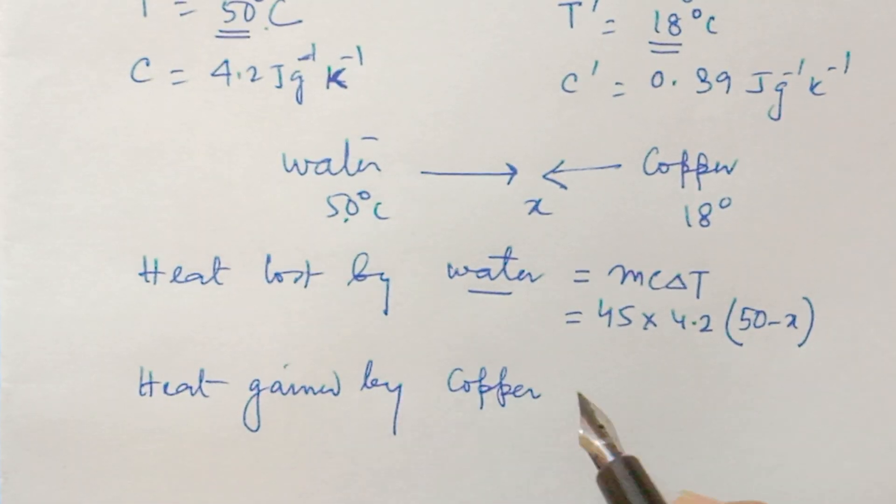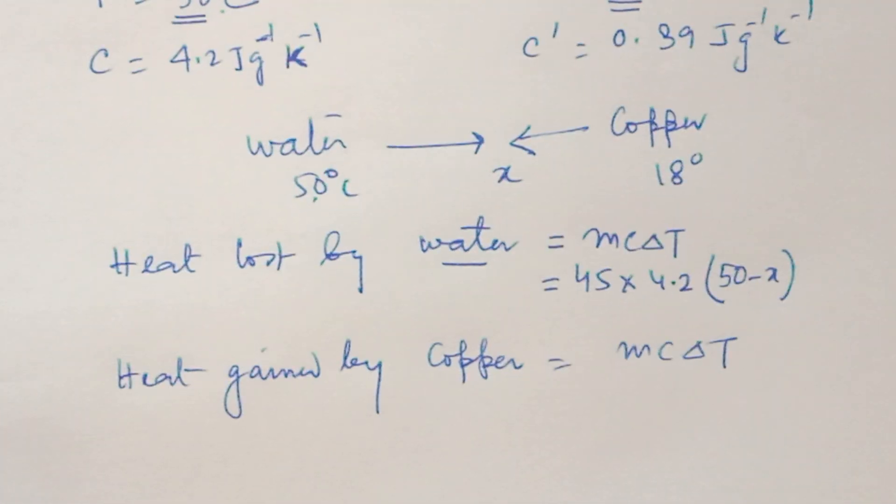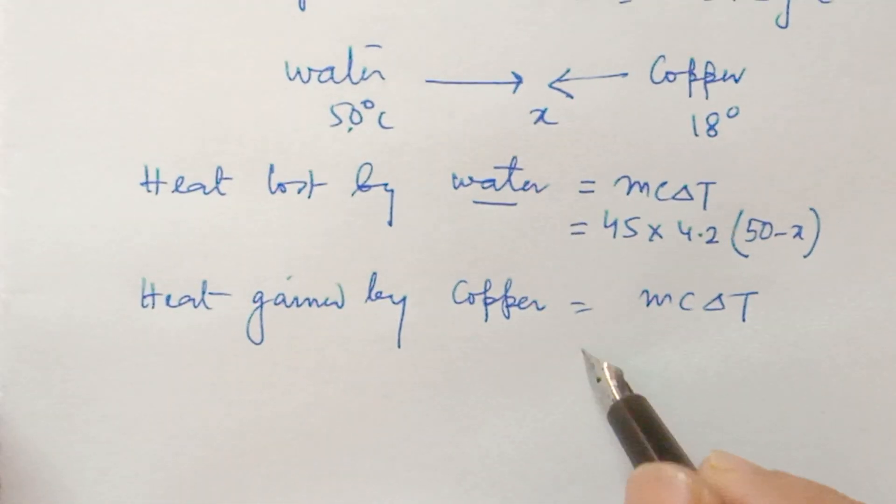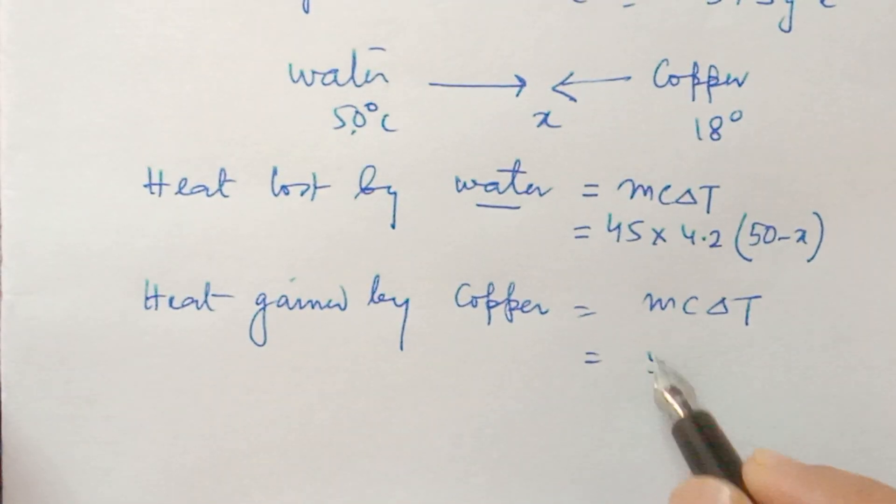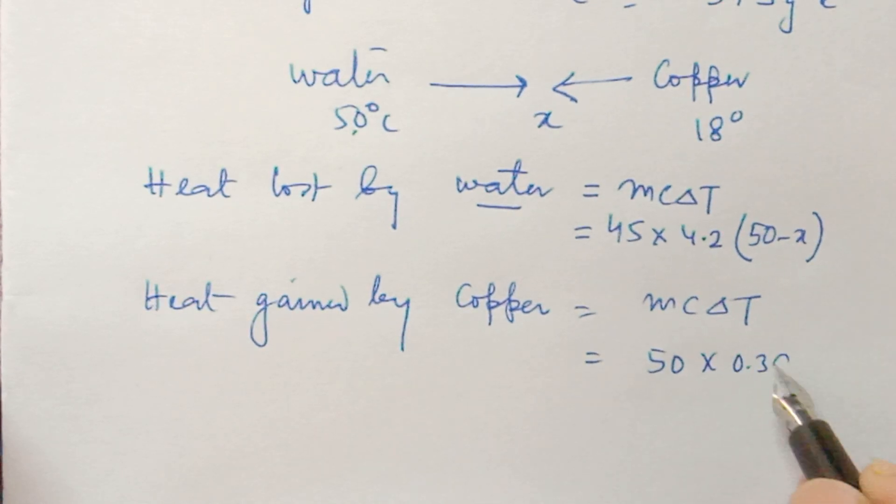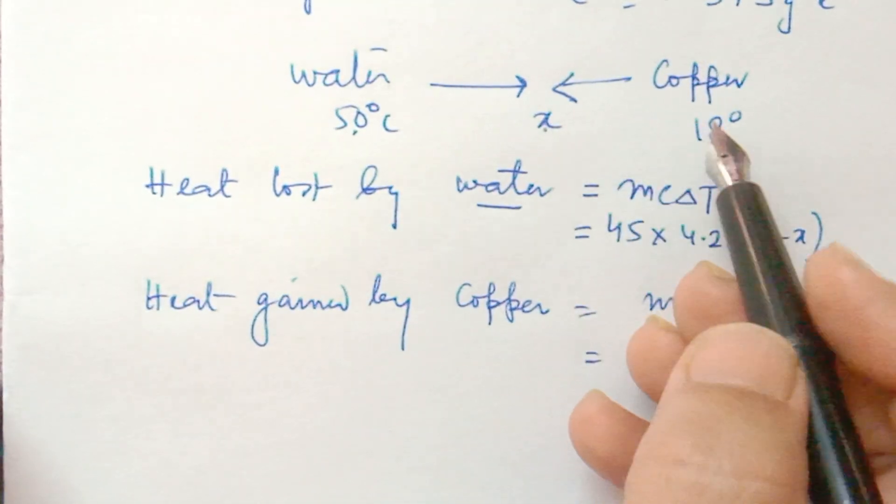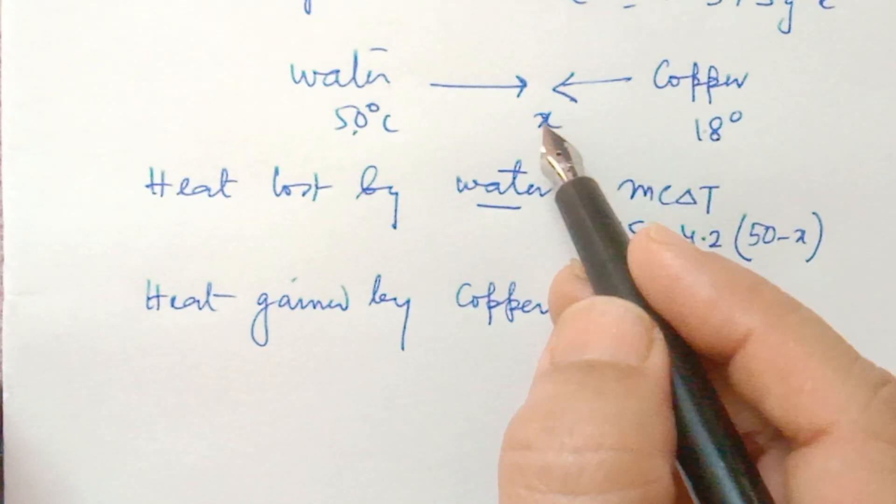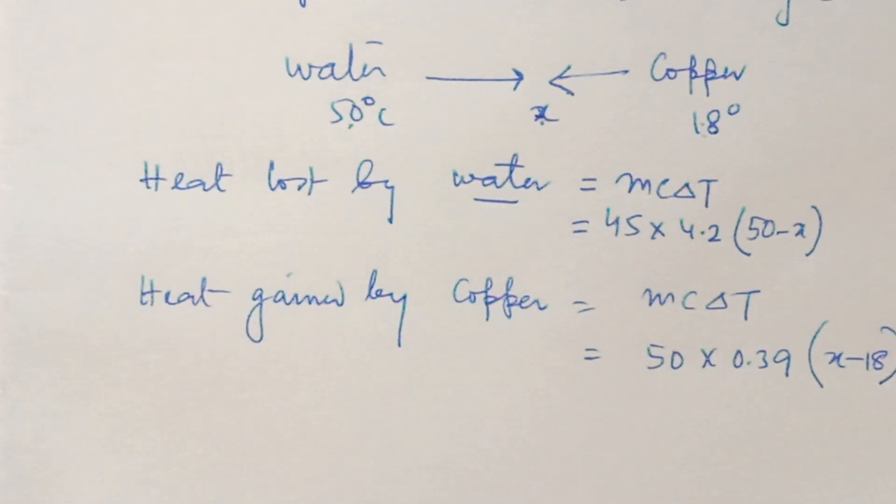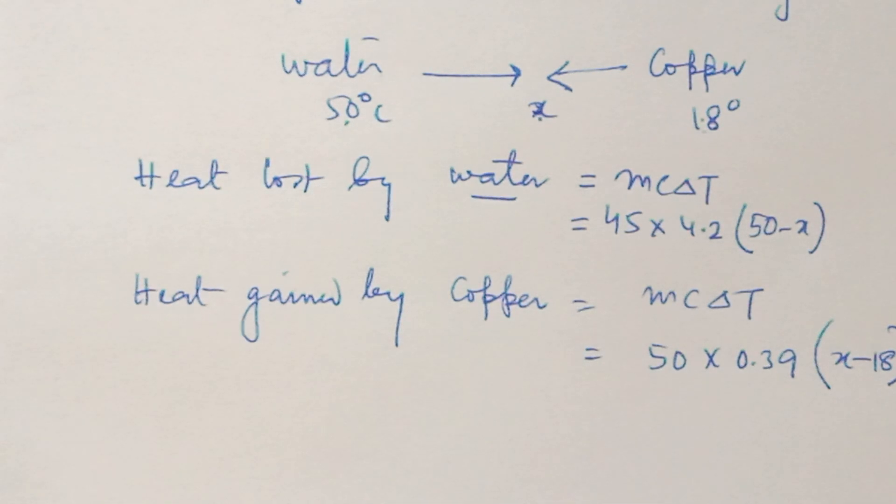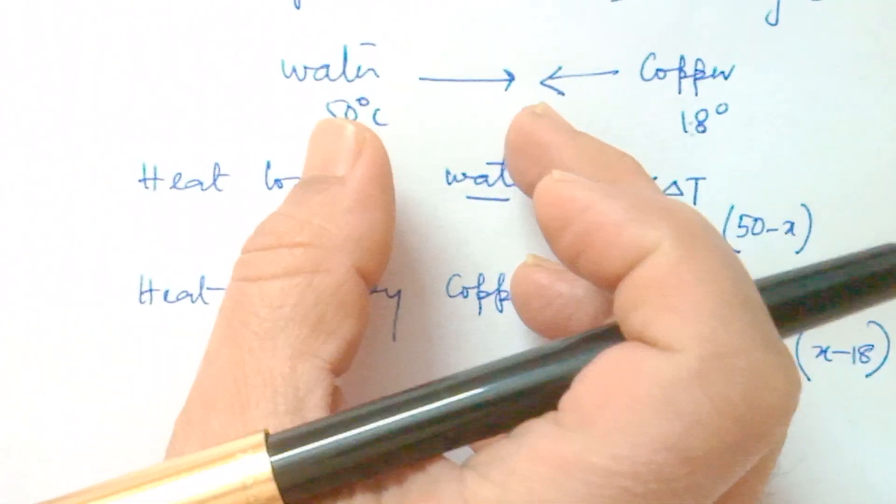Heat gained by copper. This formula will be m c delta T because there's no change in state. m is 50, c is 0.39, delta T: copper was 18 going to x. Heat gain so x minus 18.